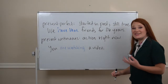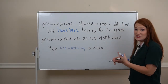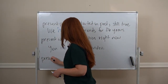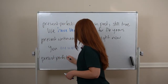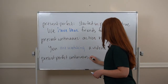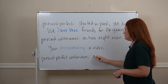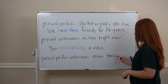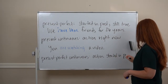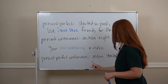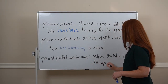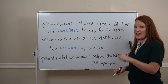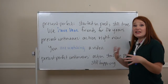So present perfect continuous is going to be a combination of these two things. Present perfect continuous is for an action that started in the past and it's still happening — an action or activity that started in the past and is still going on.